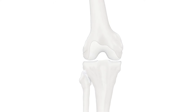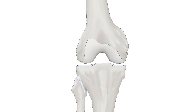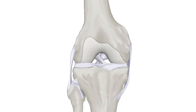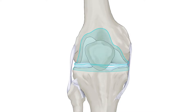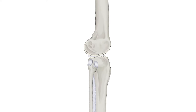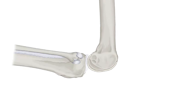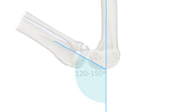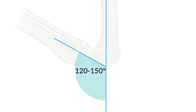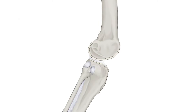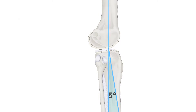The knee joint is stabilized by several different structures, including the menisci, the cruciate ligaments, the collateral ligaments, and the joint capsule. Its most important function is to act as a hinge. It allows a physiological flexion between 120 and 150 degrees. Extension rarely exceeds 0 degrees and is considered pathological if greater than 5 degrees.